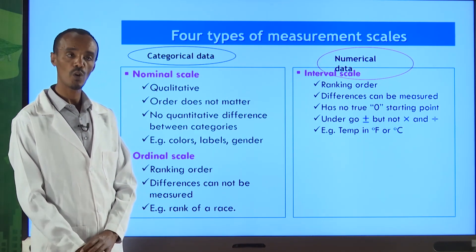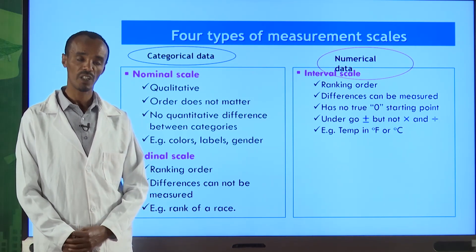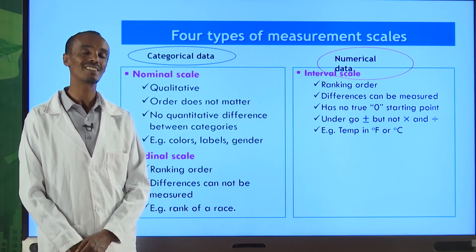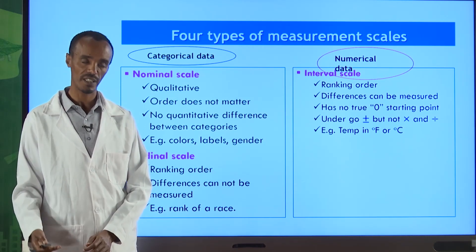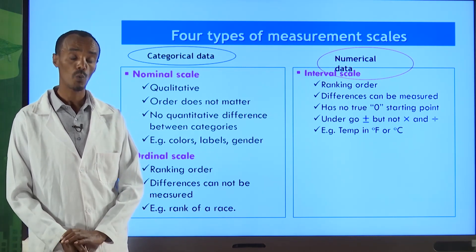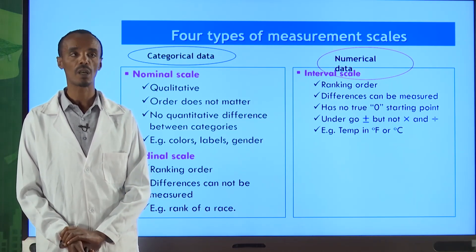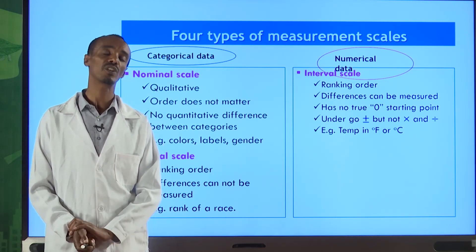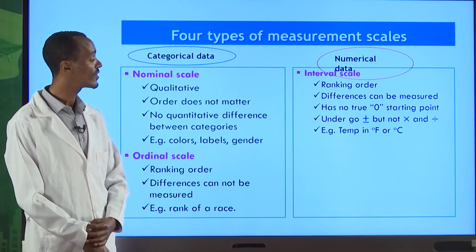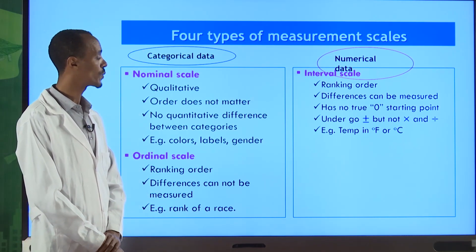If we take the temperature of the body to be zero degrees Celsius, zero seems to be the starting point but it doesn't mean the temperature is actually zero in a true sense. The SI unit for temperature is Kelvin — when we refer to the Kelvin scale, zero is the true starting point. But for Fahrenheit and Celsius, zero is not the true starting point. Therefore for the interval scale, zero is not the true starting point.